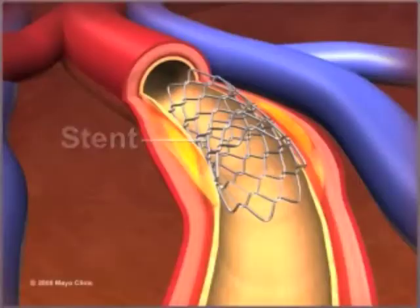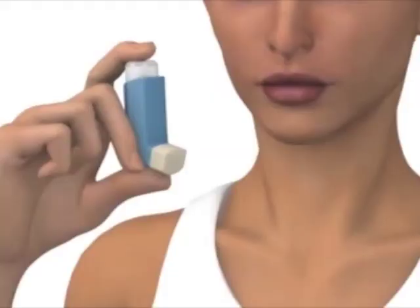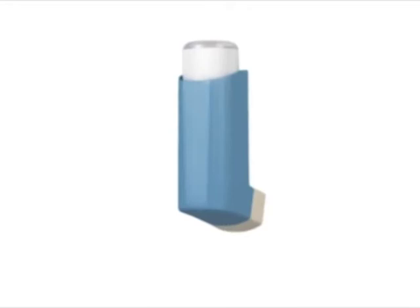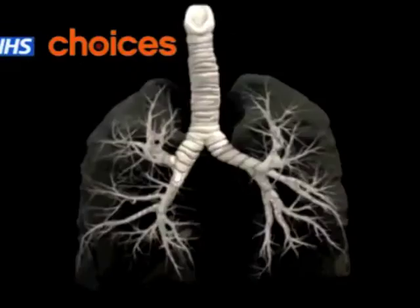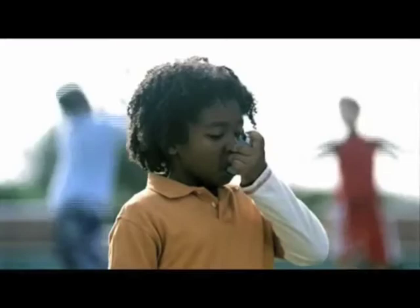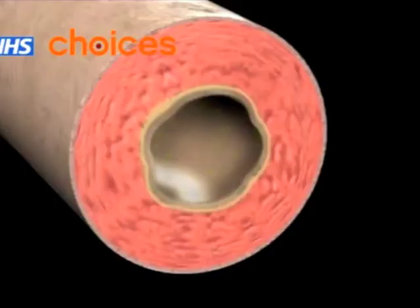Another example of a medical device that uses fluid mechanics is an asthma inhaler. Asthma occurs when the lungs swell, making breathing much harder. The medicine in the inhaler helps bring down swelling in the lungs, which increases the cross-sectional area, allowing the user to breathe more easily.